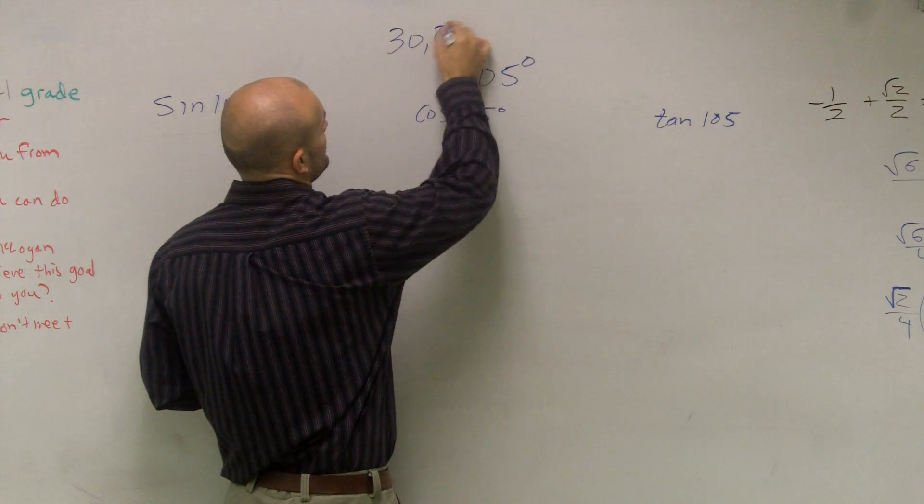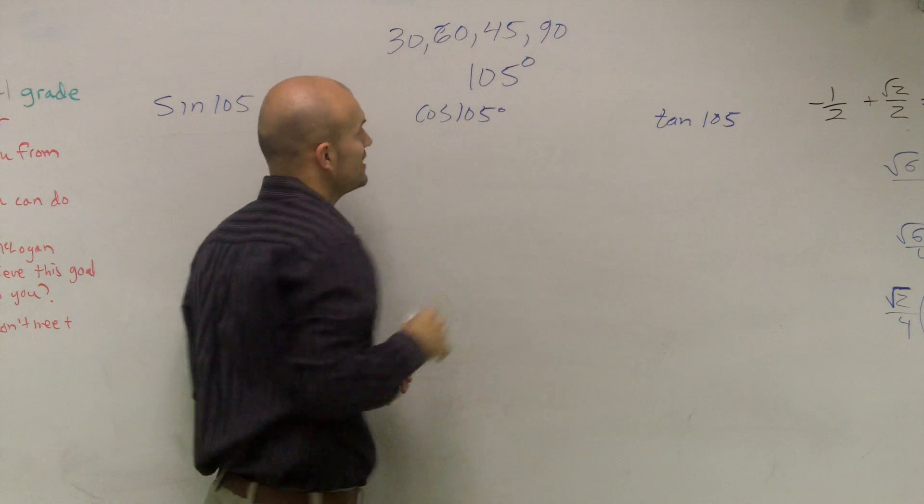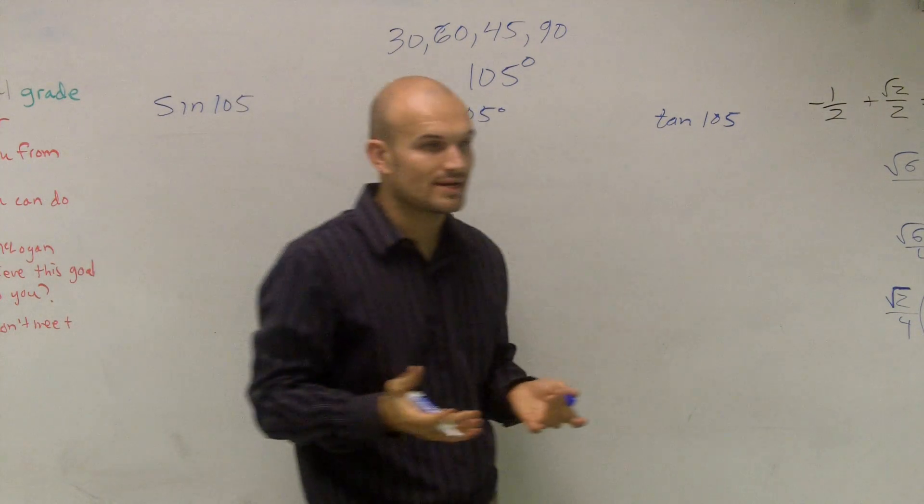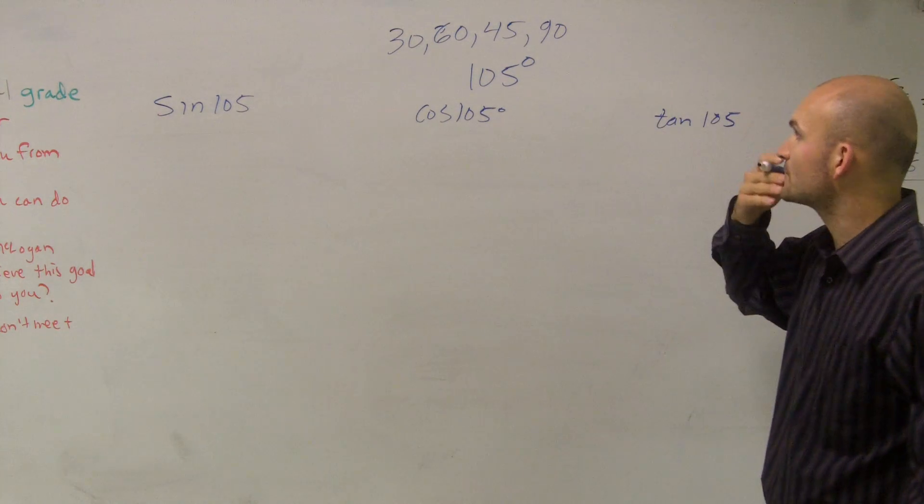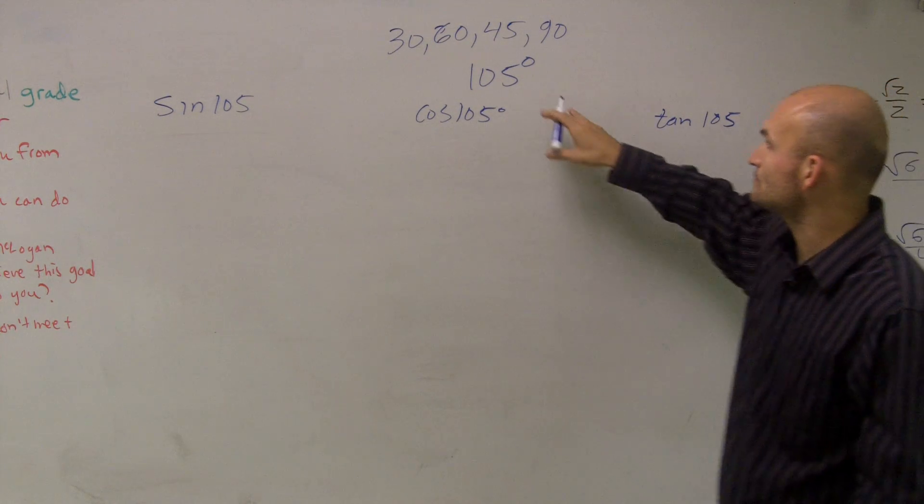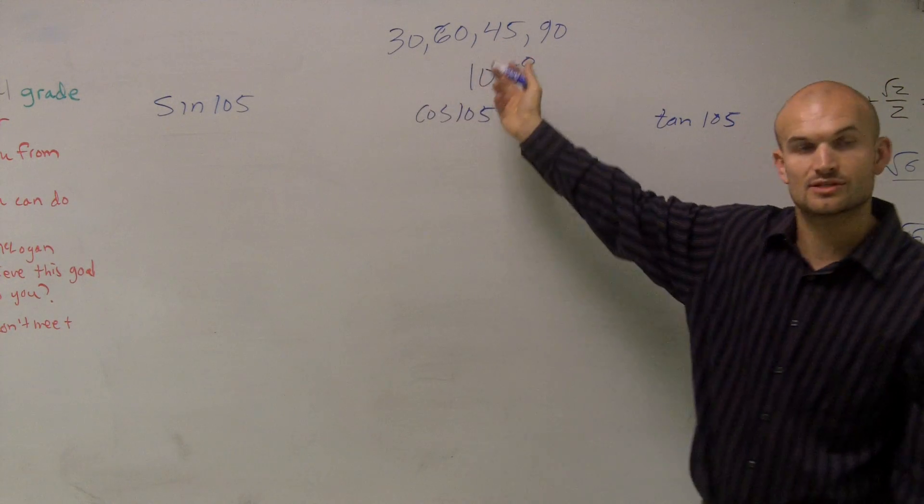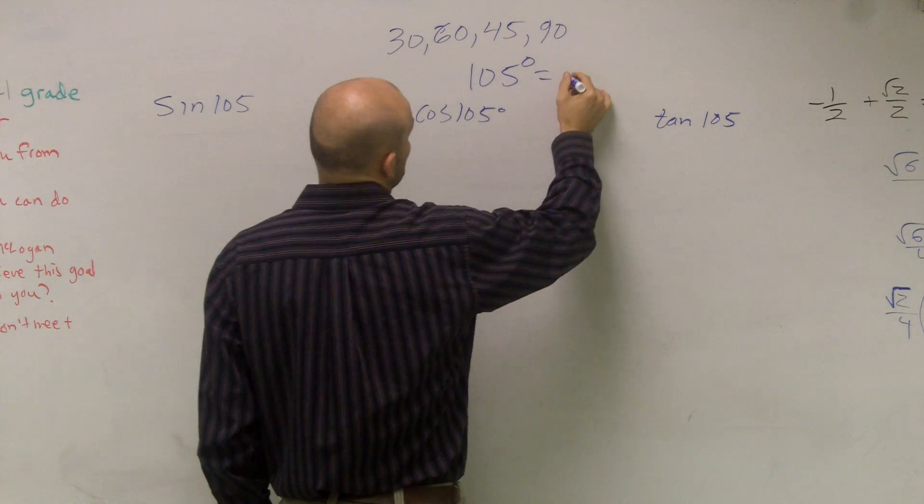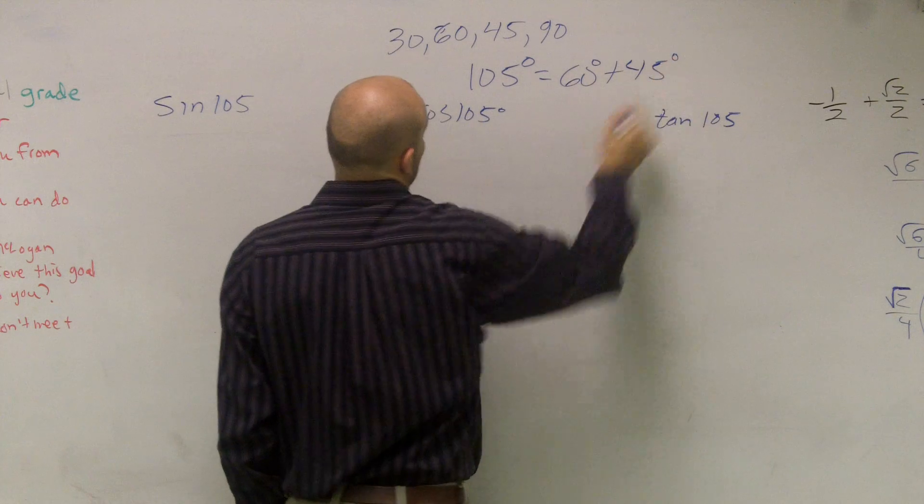So what I can do is if I use the points 30, 60, 45, and 90, if I can write 105 as a sum and difference of those two points, then I'll be OK. I'll be able to be like, oh, all right, I can now write it as I can figure out the sum of 60 or the sum of 45. So what I end up looking at is 105 degrees. That can be rewritten as 60 degrees plus 45 degrees.